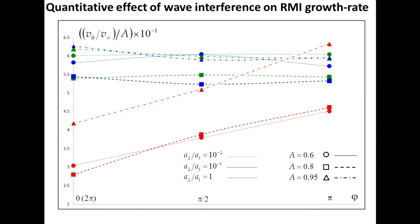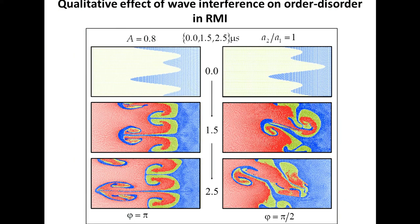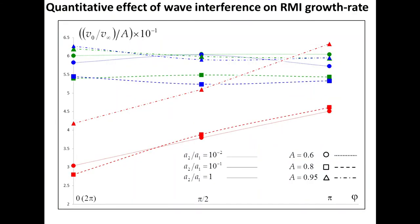This parameter plays an important role not only qualitatively in creating order or disorder, but also quantitatively in influencing the growth rate of the instability. For the same ratio of first and second harmonics, varying the initial phase — in-phase, anti-phase, or random — can change the initial growth rate substantially, essentially two-fold, when the amplitude is large.